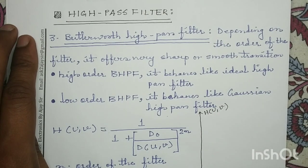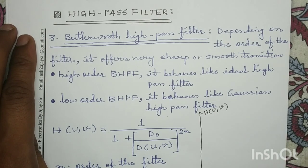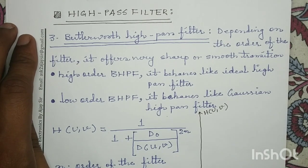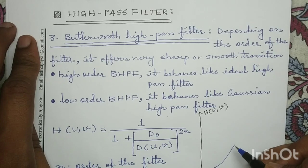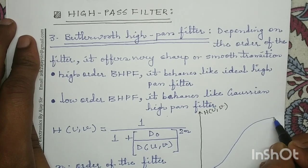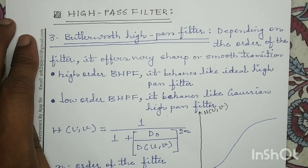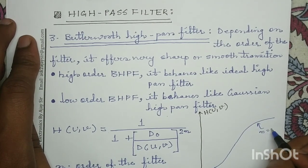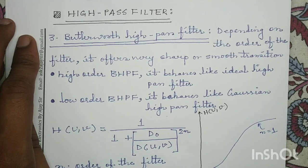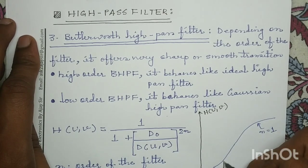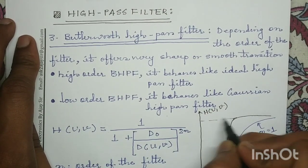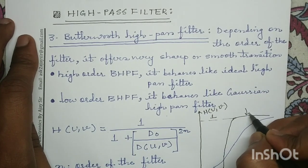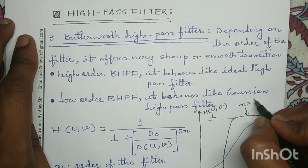If we plot the transfer function of the Butterworth high pass filter with H(u,v) on the y-axis and D(u,v) on the x-axis, for a low-order Butterworth high pass filter — for example N=1 — it offers a smooth transition like the Gaussian high pass filter. For a high-order Butterworth high pass filter — for example order 4 — it offers a sharp transition like the ideal high pass filter.